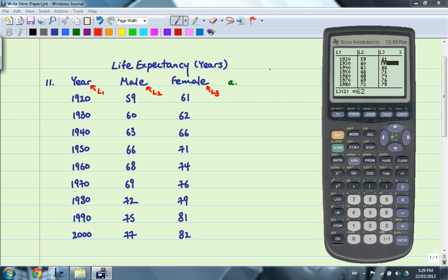So once you enter your data, you want to create a scatterplot, so you need to change your window to make sure that everything fits. In this case, my lower bound and my upper bound for X, which is L1, will be 1900 because I want it to be a little bit lower than 1920 and my Xmax will be a little bit over the year 2000, 2050.